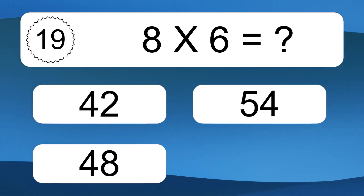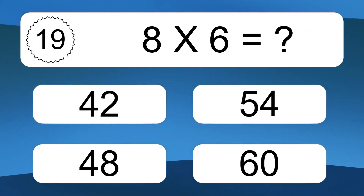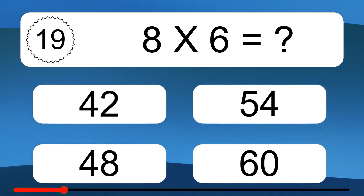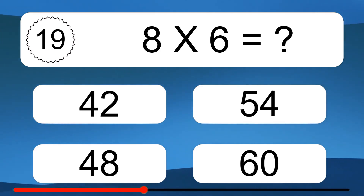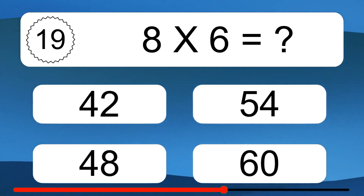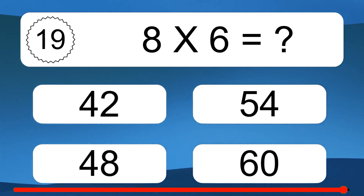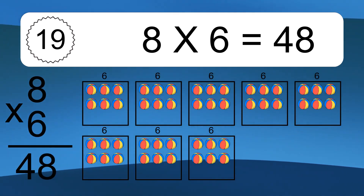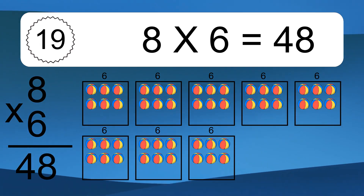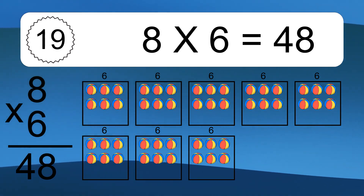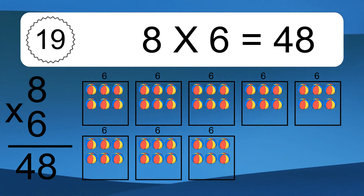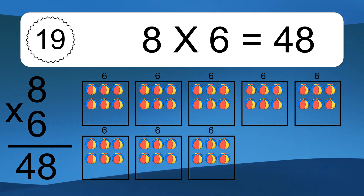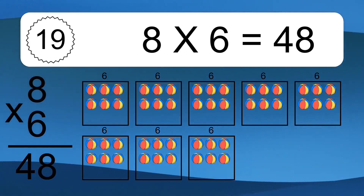8 times 6 equals what? 8 times 6 equals 48. We have 8 boxes, and each box has 6 colorful balls inside. If you count all the balls in all the boxes together, you will have 8 times 6 balls. This equals 48 balls.